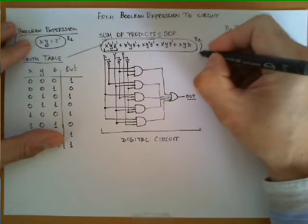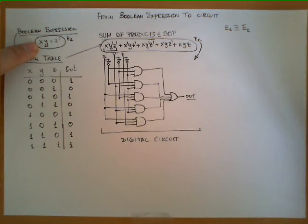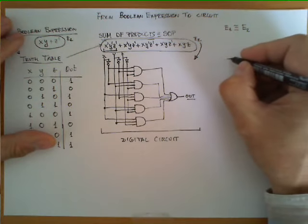Now from E2 we derive this circuit. But if we look closely at this expression here, we also have the possibility of deriving a circuit looking at this expression. This expression can be represented as this.